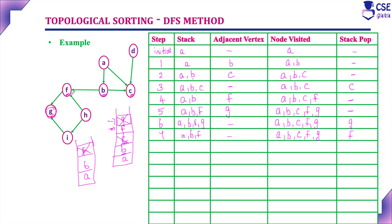After popping F, the stack contents are A and B only. Consider adjacent vertices to B: F and C are already visited, so B has also reached a dead end. Nodes visited remain the same. We pop B from the stack. After popping B, the only element in the stack is A. Both B and C adjacent to A are already visited, so we pop A as well. Now the stack is empty.